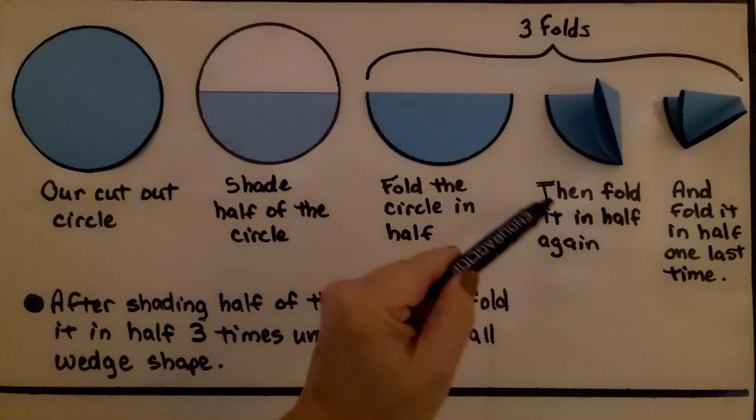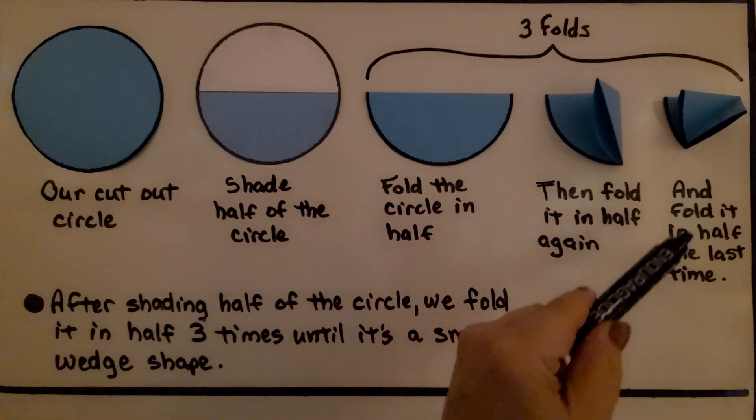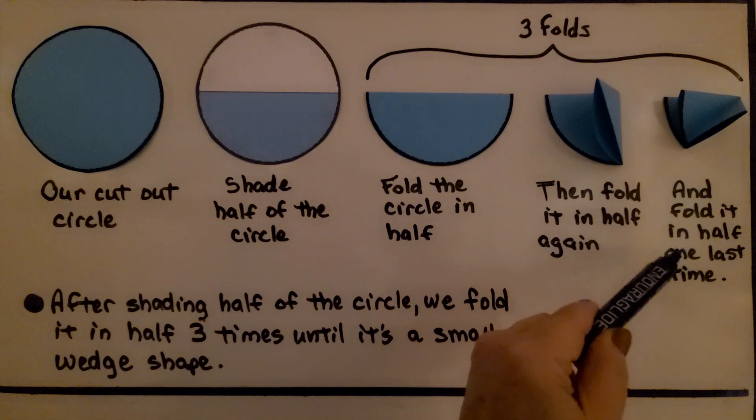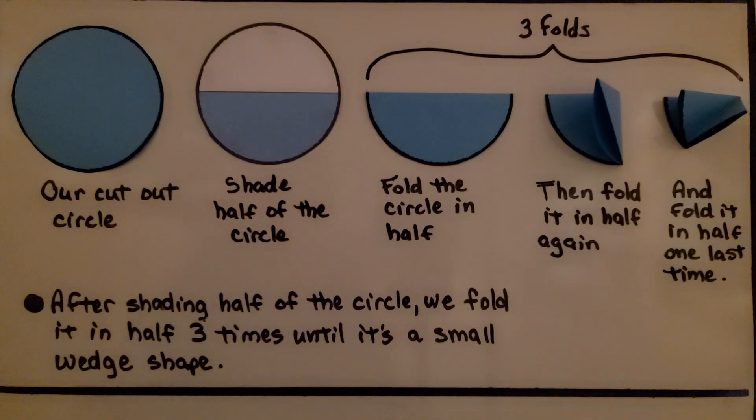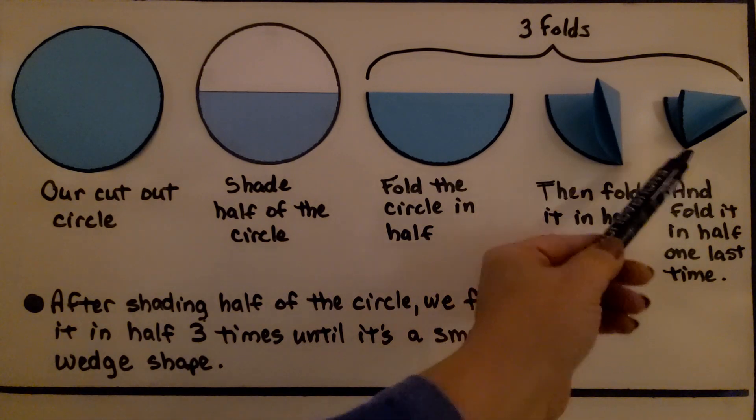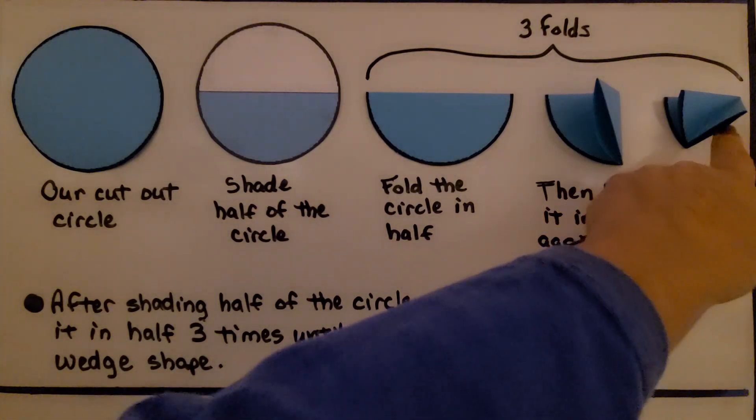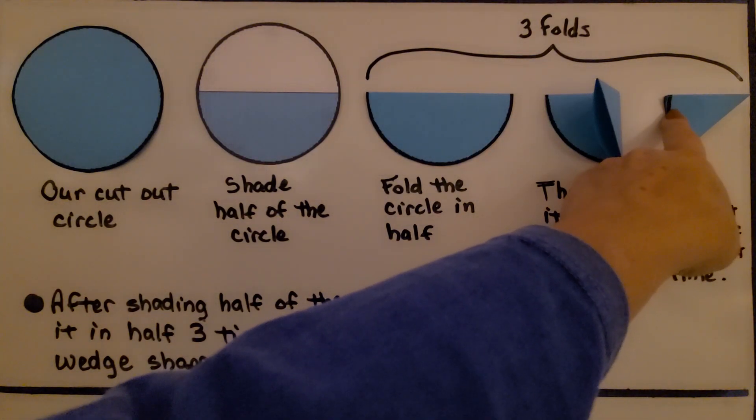Then we fold it in half again and we finally fold it in half one last time. That's going to be three folds. So after shading half the circle, we fold it in half three times until it's a small wedge shape. So it's going to look like this when we fold it the third time.